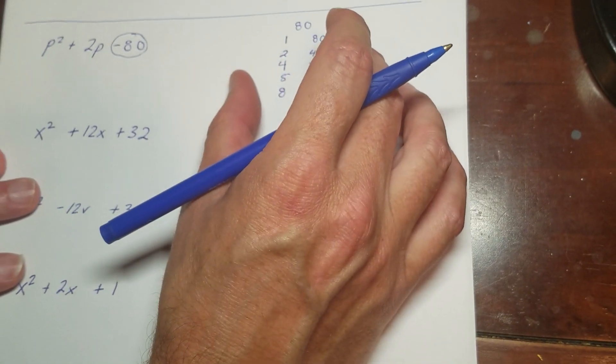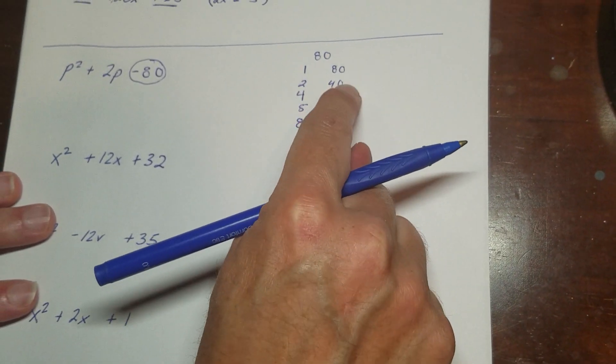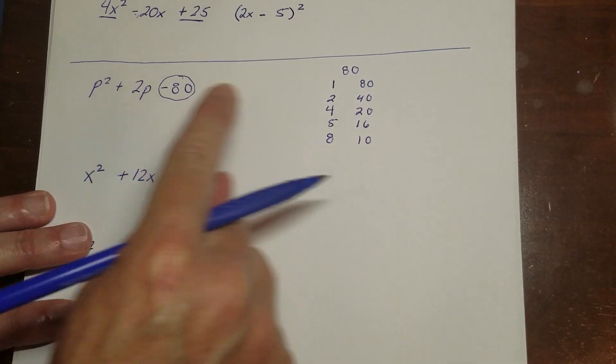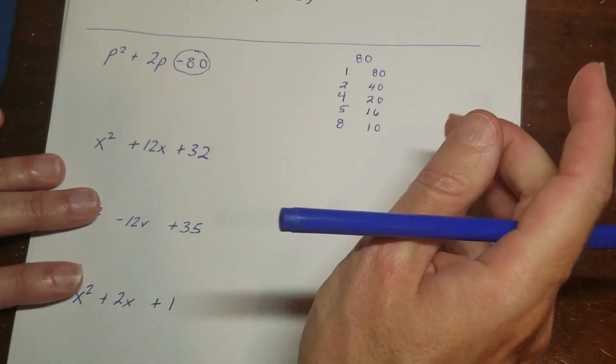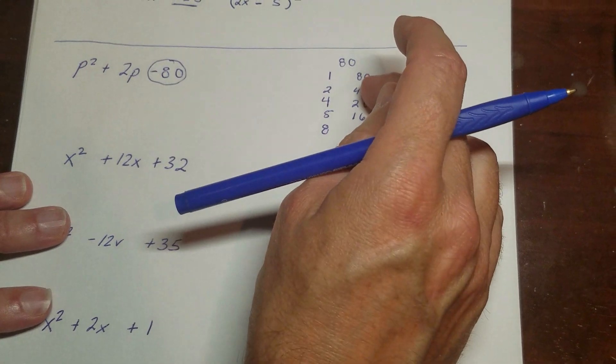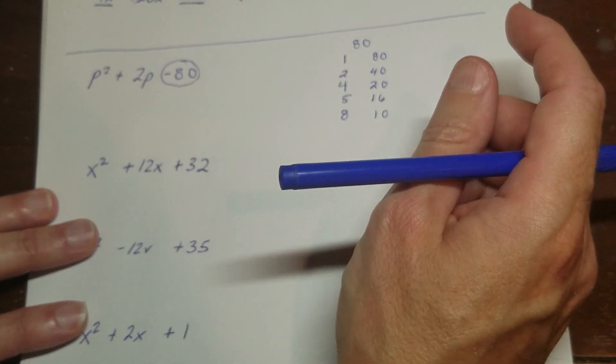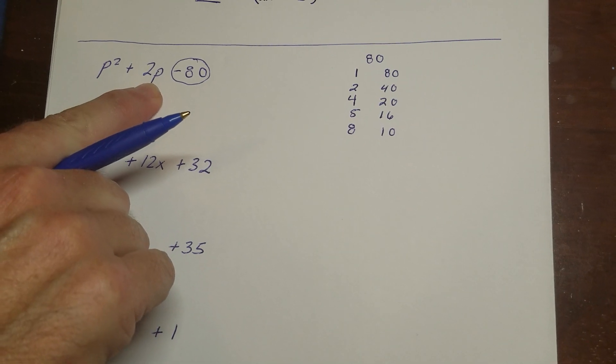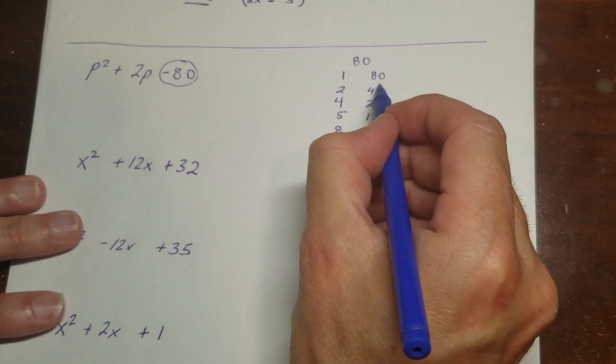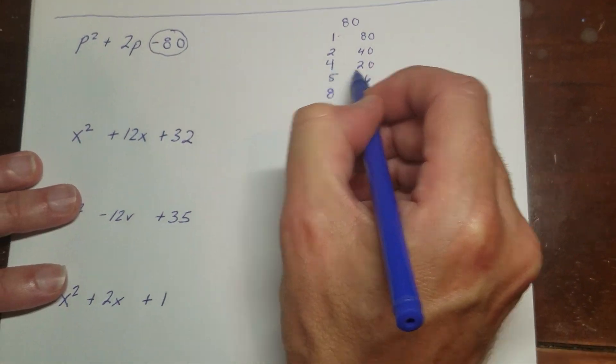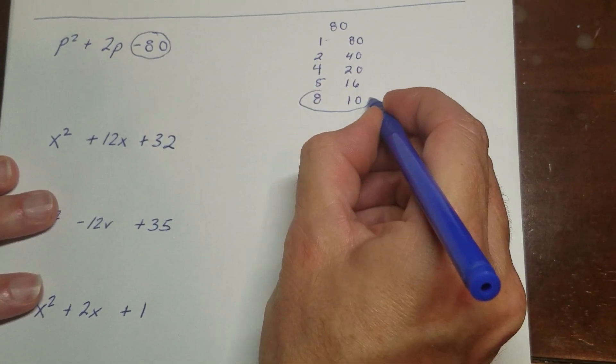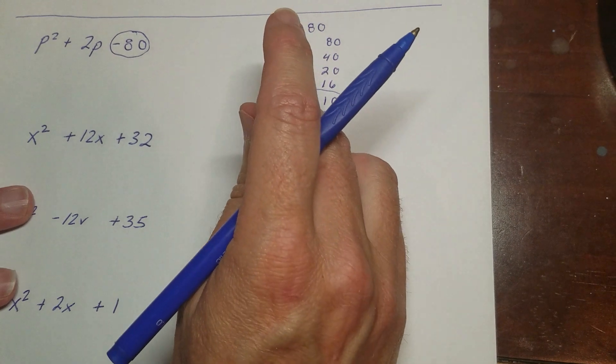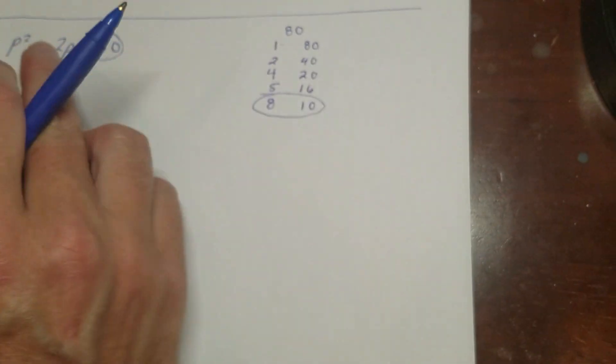So after I have my list, what I have to do is find a pair of these that is going to add to my 2. So I can do that by adding or subtracting. So, for example, 80 plus 1 is 81. 80 minus 1 is 79. Well, I don't want 81 or 79. I want a 2. So if I look at this list here, I can see the 8 and the 10. 8 and 10 are 2 apart.